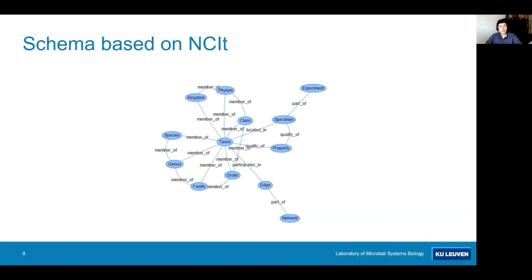One of the core components of the Mako software is a data schema based on the National Cancer Institute Thesaurus, meaning it uses a standardized language to describe these relationships between things. And here you're looking at this schema. We have a taxon in the center, which can have different properties, like its taxonomic assignments, but also the set specimens or samples it was found in, and indirectly the experiments it was part of, as well as any other type of property that it may have.